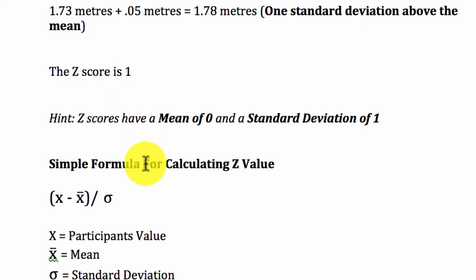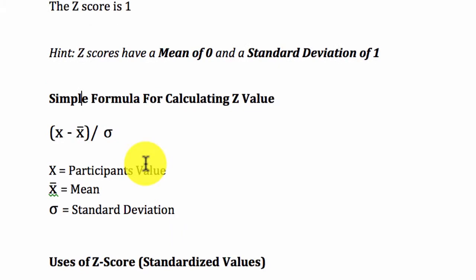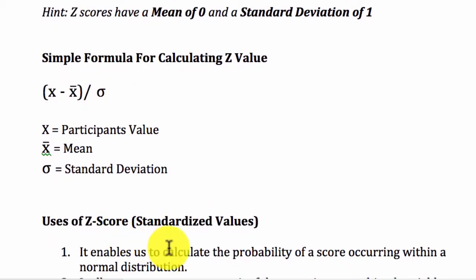Now, what are the uses of Z score? Why do we need Z scores anyways? The first thing you need to know about Z score is that it enables us to calculate the probability of a score occurring within a normal distribution. So, for example, let's take this Z score of 1.